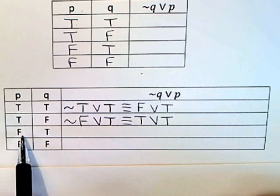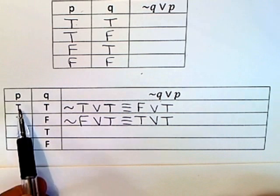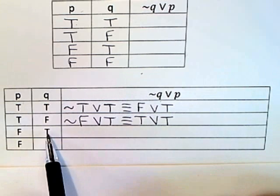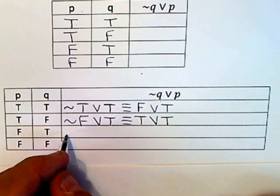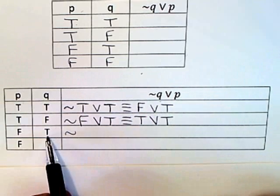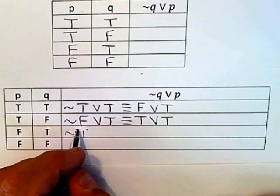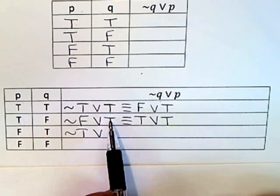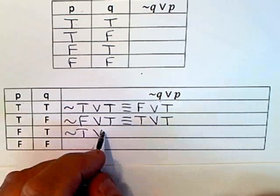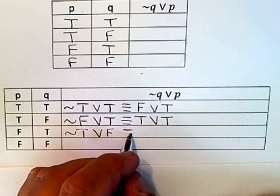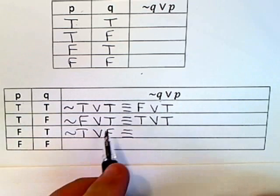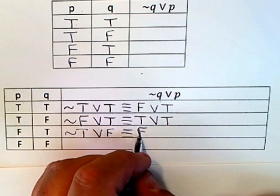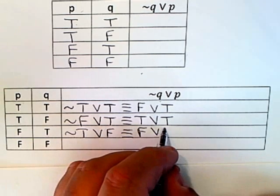Moving down to the third, I'm going to put F in for P and T in for Q. So I get not, and again Q is true on this line, or, and then P is false. So that's equivalent to not true is false. That's equivalent to false or false.